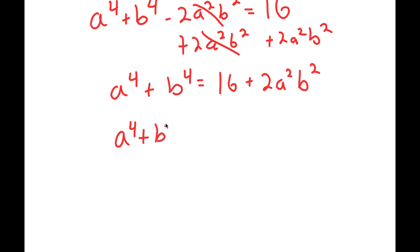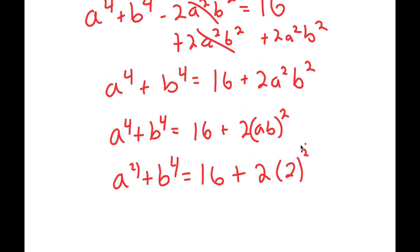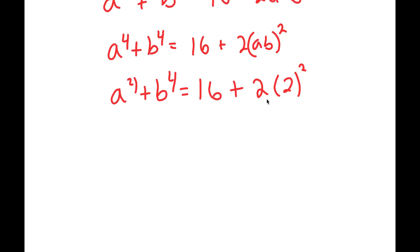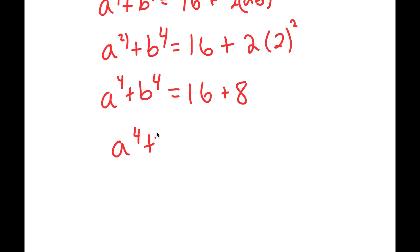I can rewrite the right side as 16 plus 2 times (ab) squared. From equation 2, ab equals 2, so (ab) squared equals 4. This gives a to the fourth plus b to the fourth equals 16 plus 2 times 4, which equals 16 plus 8, equal to 24. So a to the fourth plus b to the fourth equals 24 — call this equation 3.